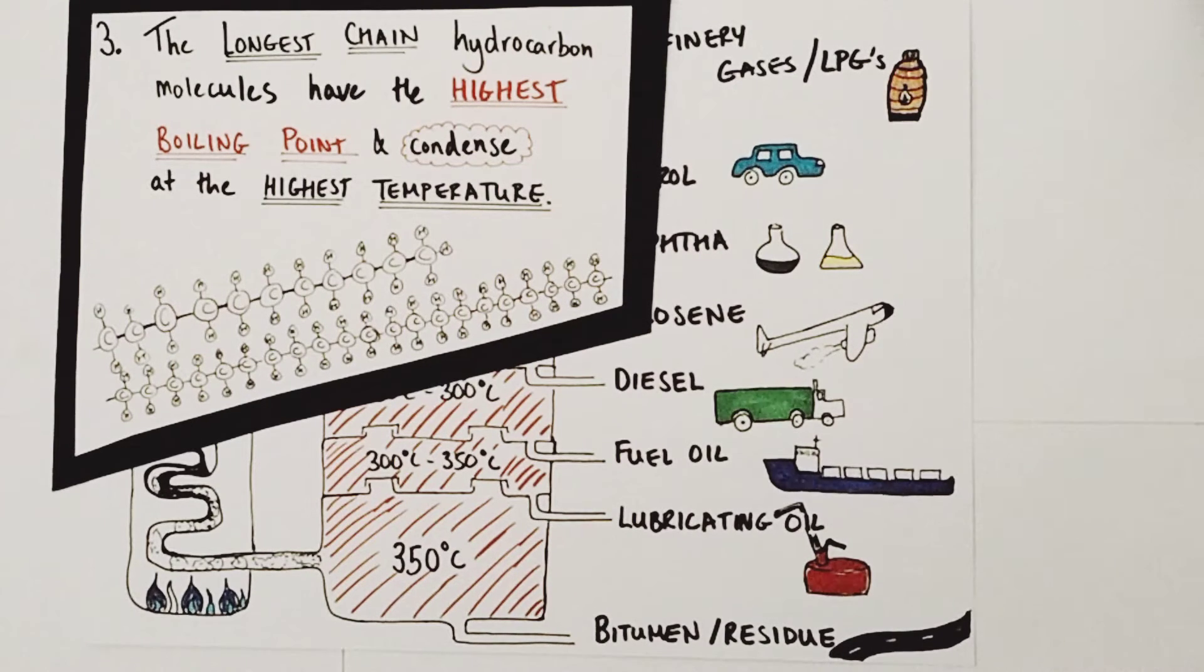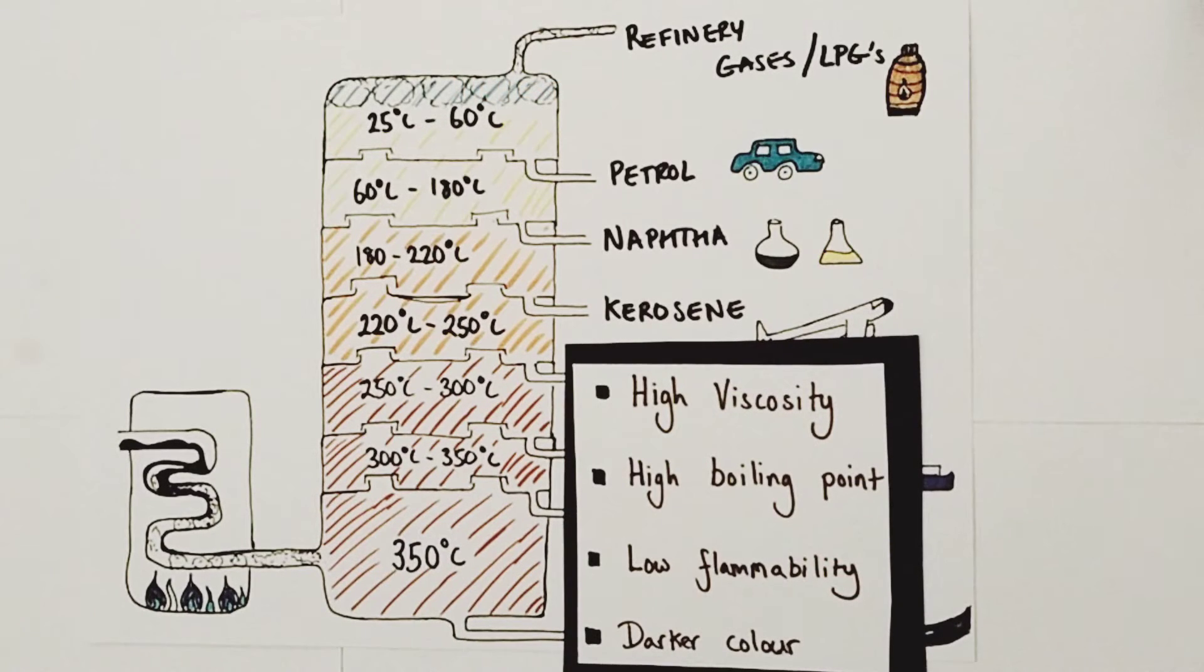Short chain hydrocarbons won't be able to build up as many weak intermolecular forces along their shorter chain lengths. Each division of temperature will allow similarly sized molecules to condense - they won't be exactly the same size but similar lengths. We call that collection a fraction because it is a fraction of the overall crude oil population of molecules, and we get a number of fractions.